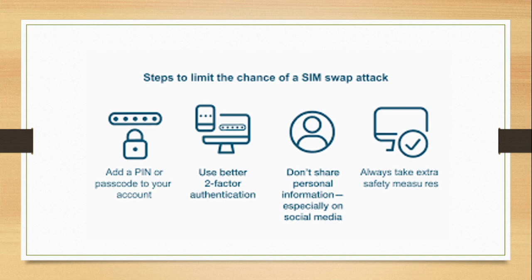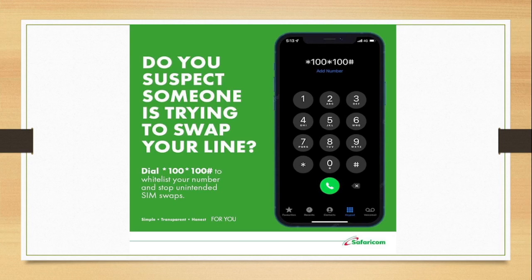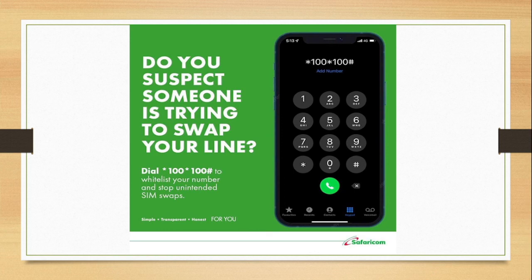Use two-factor authentication — this is very important. Do not share a lot of information on your social media accounts, and always take necessary safety measures wherever possible. For those using Safaricom as their main carrier, they have introduced a protective mechanism where you can whitelist your number by dialing *100#, so that if someone wants to swap your SIM they are forced to go to the shop where you originally collected your SIM card.